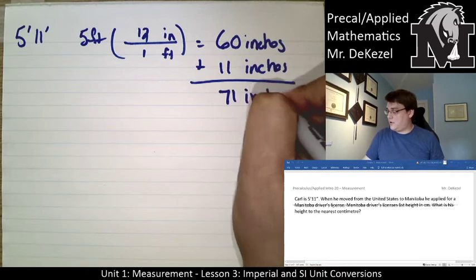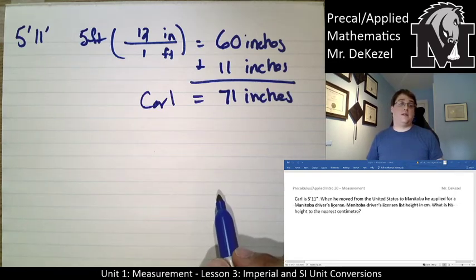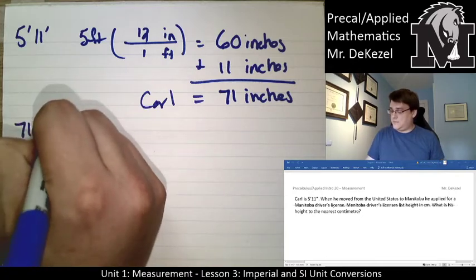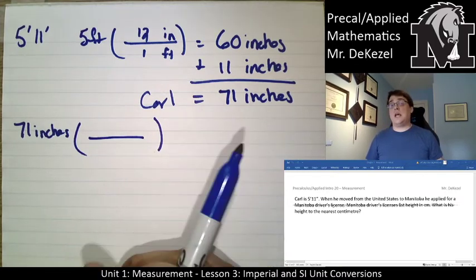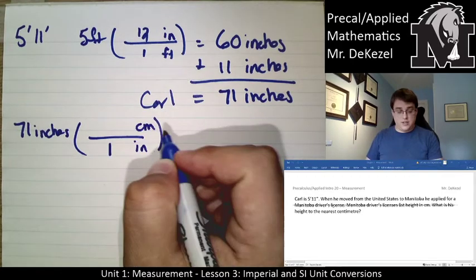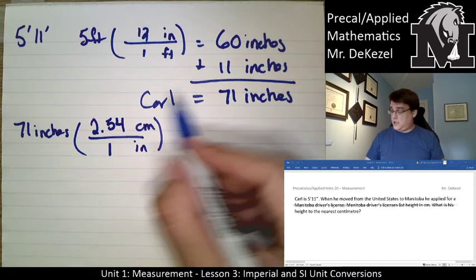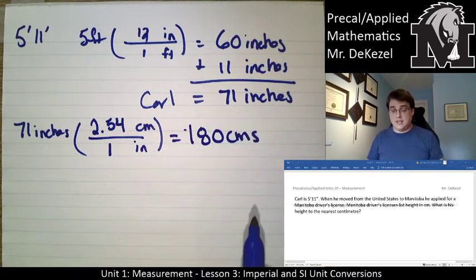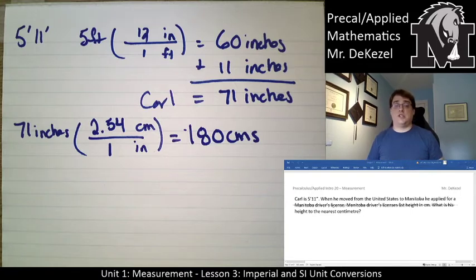Now we want to know how many centimeters that is. We take that 71 inches and use our conversion factors. Inches goes in the bottom, centimeters goes in the top. In one inch, there's 2.54 centimeters, so we are going to multiply 71 by 2.54 to get 180 centimeters. You could do this a different way—convert the 5 feet into centimeters and the 11 inches into centimeters and add them up. That would work as well. So Carl is 180 centimeters tall.